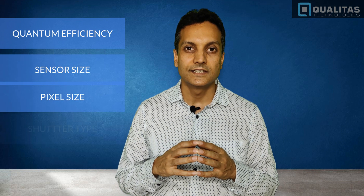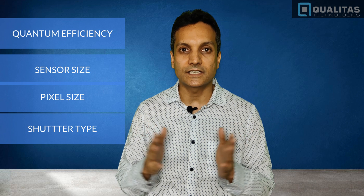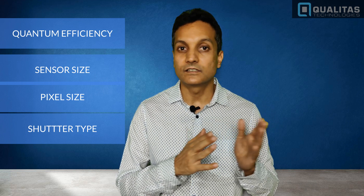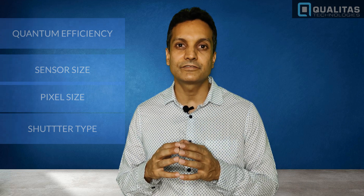That's when things like different quantum efficiencies, different sensor sizes, different pixel sizes, and even differences like shutter types — being global shutter versus rolling shutter — make a key difference in acquiring quality images which are clear to the software, not just to the human eye.